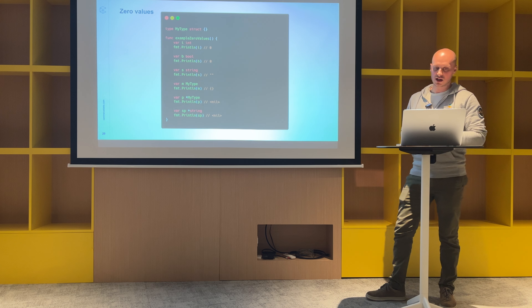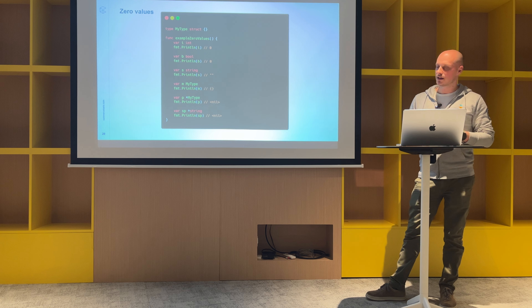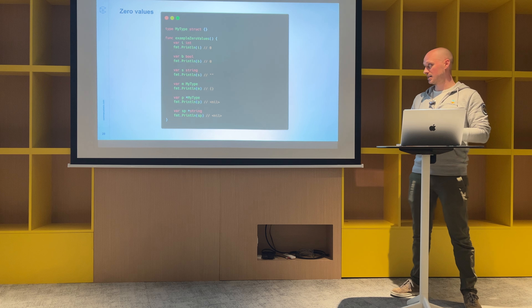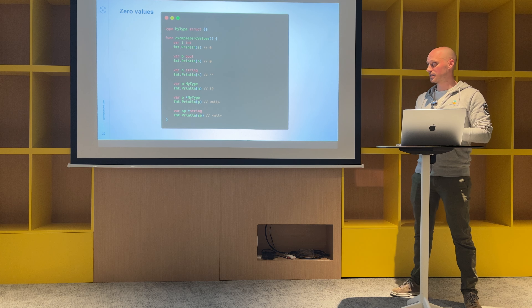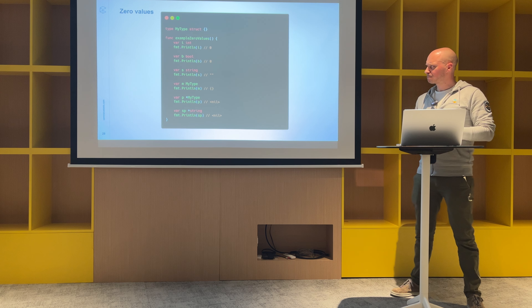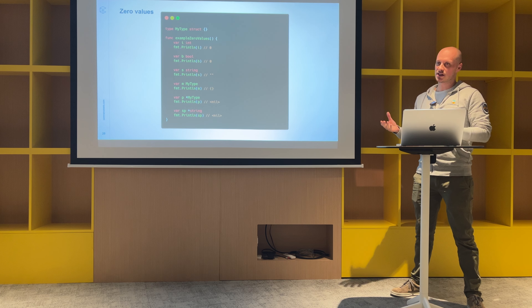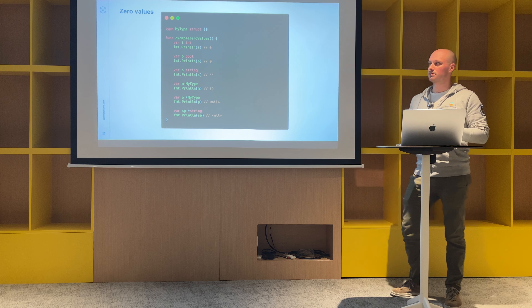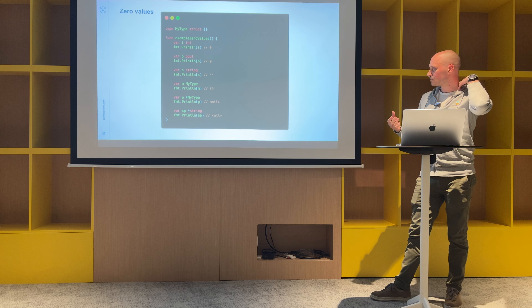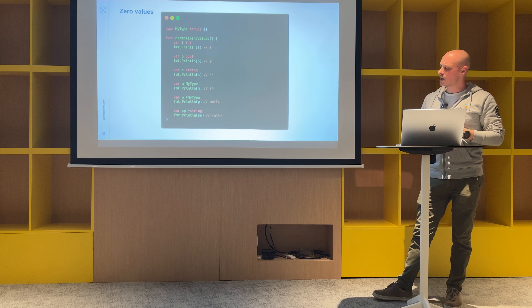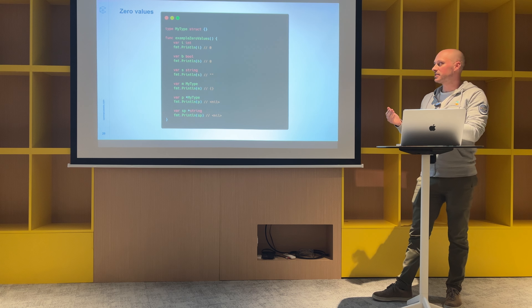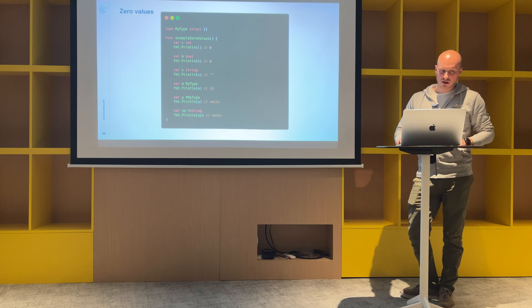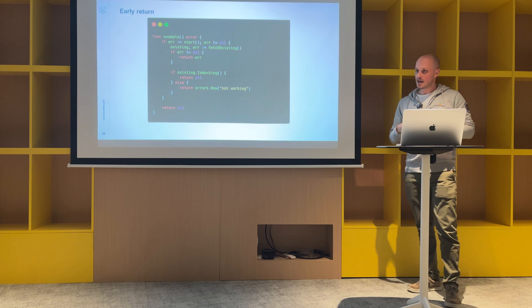There's also the concept of zero values — the value a variable takes when not initialized. For numeric types it's zero, for booleans it's false, for strings it's an empty string, which differs from JavaScript and Java. If you want to declare something as nil, it needs to be a pointer. This is important when you marshal and unmarshal JSON objects to structs, since declaring something null requires a pointer, not an empty variable.